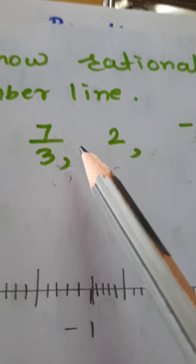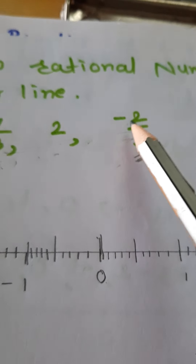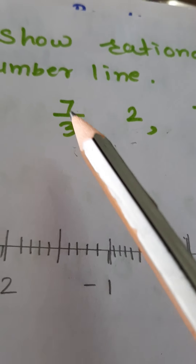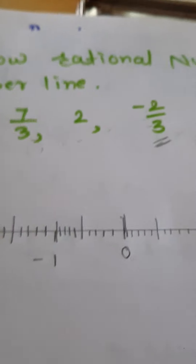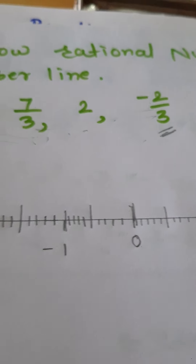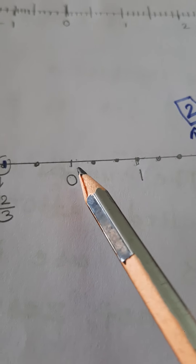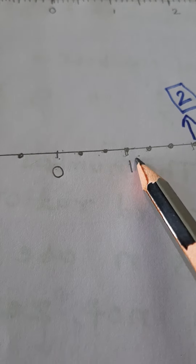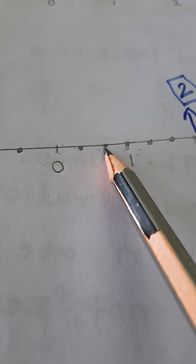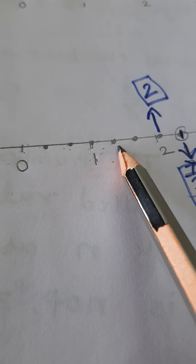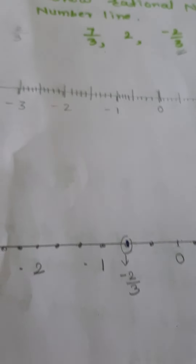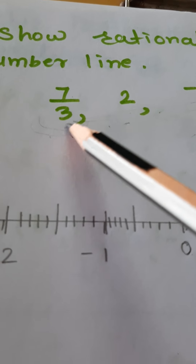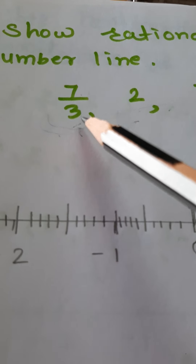Here one example is given: show 7 by 3, 2, and negative 2 upon 3 on the number line. First, you have to observe the denominator — 3 is there. It means there are 3 equal parts from 0 to 1. In the figure, 0 is in the center and we have made 1, 2, 3 equal parts from 0 to 1. At the third part, 1 is there. After 1, again 1, 2, 3 parts — at the third part, 2 is there. And again 3 parts — at the third part, 3 is there. Because the denominator is 3, we have to make 3 equal parts from 0 to 1.